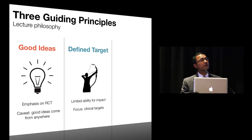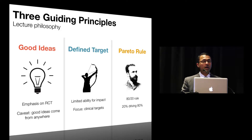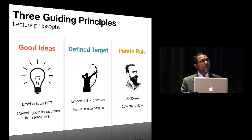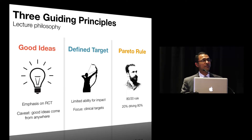The second principle is that our targets are pretty much well-defined, and so I've chosen only clinical targets where we can make a big change. Finally, I'm using a borrowed concept from the Italian economist Wilfred Pareto, called the Pareto rule or the 80-20 rule. About 80% of advances in clinical medicine are driven by only about 20% of published research. In this lecture, I've chosen that 20% of literature which projects what's in store for obstetric anesthesia in the future.